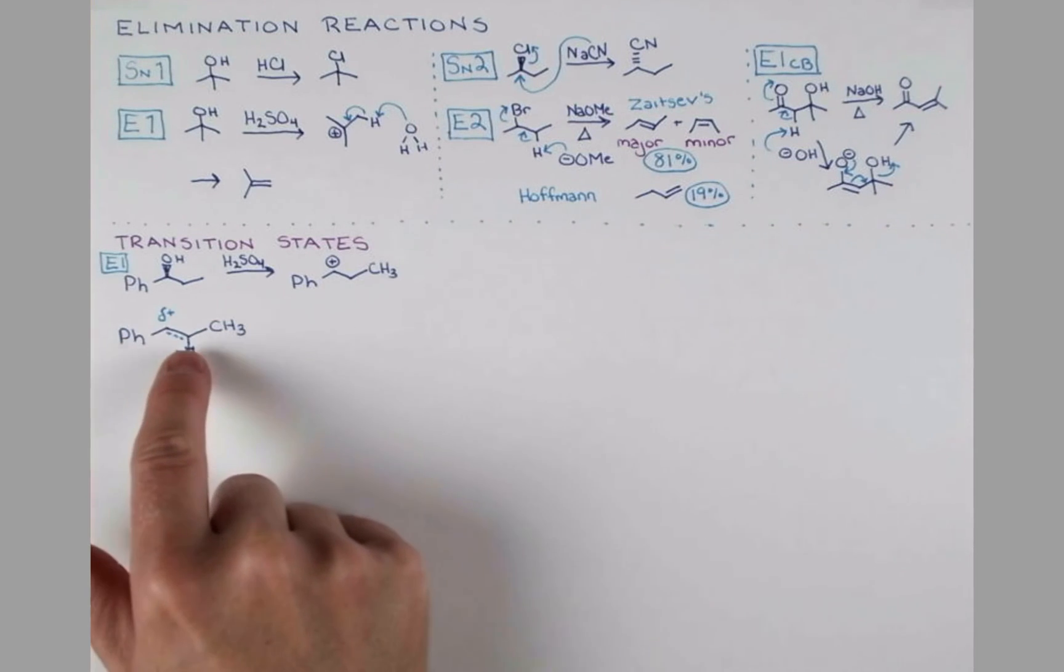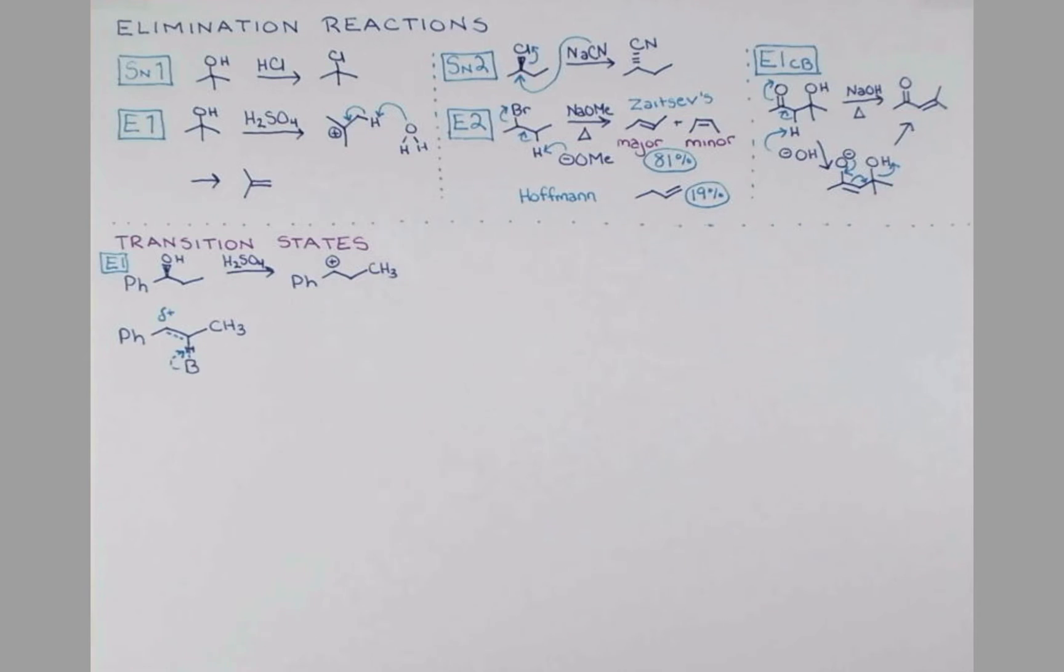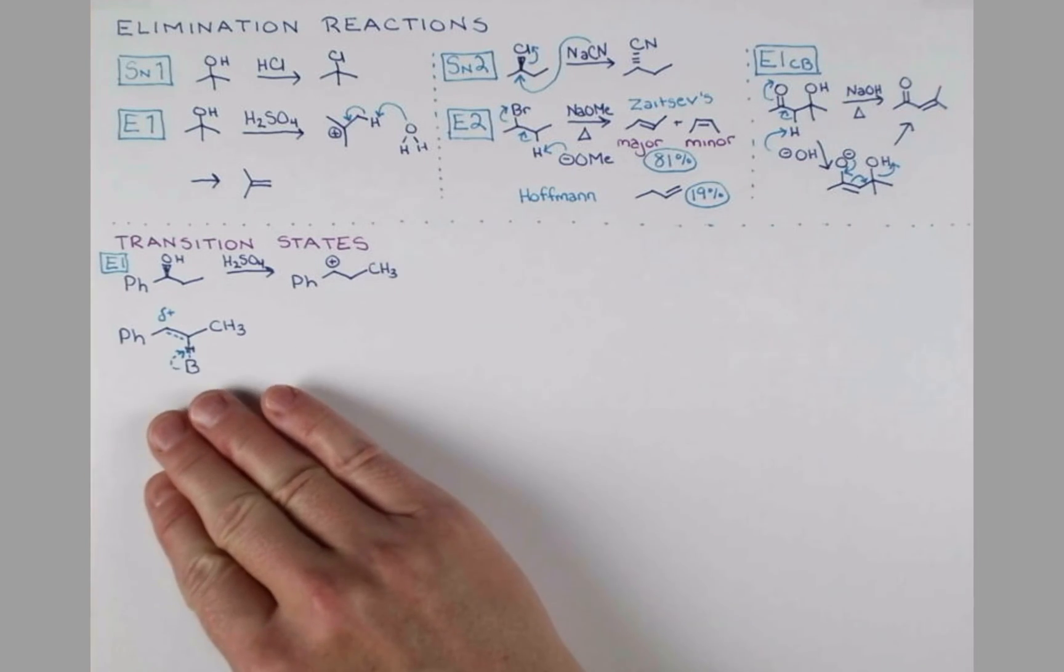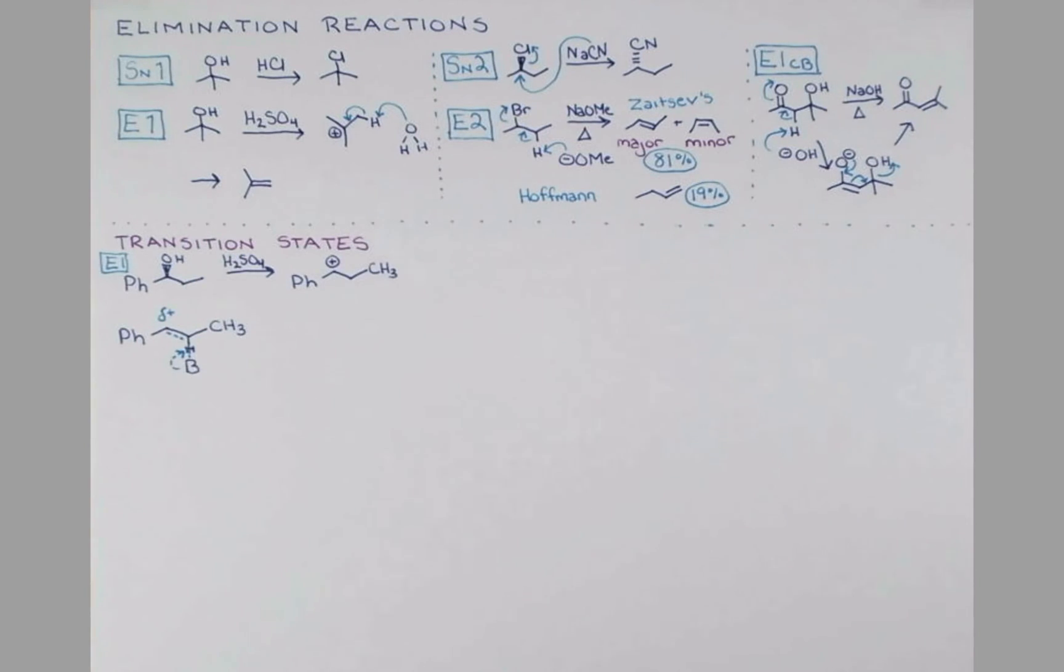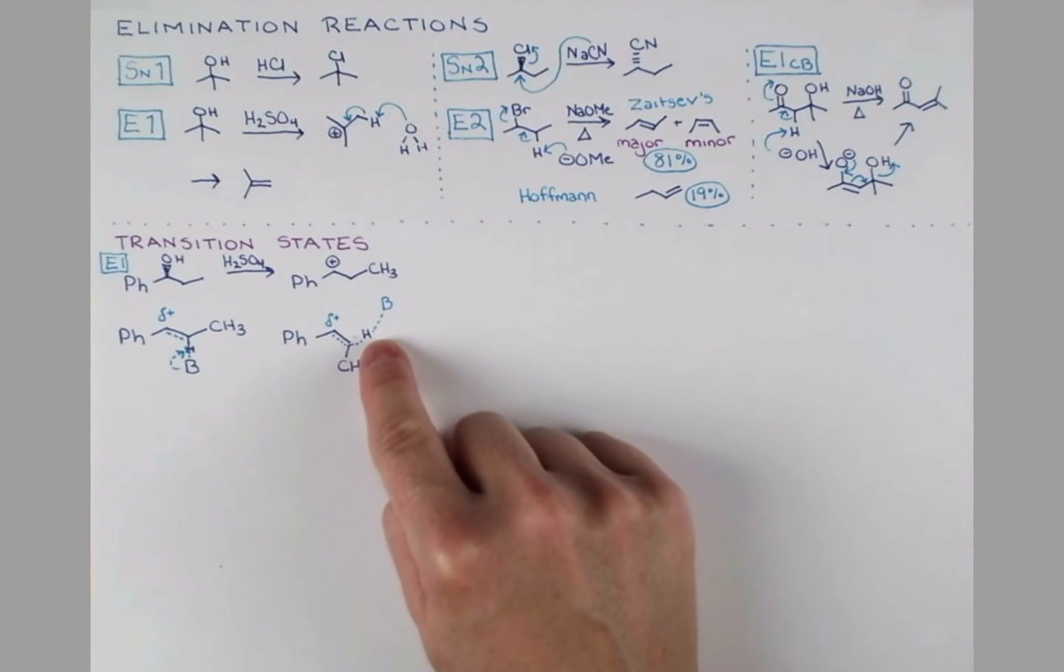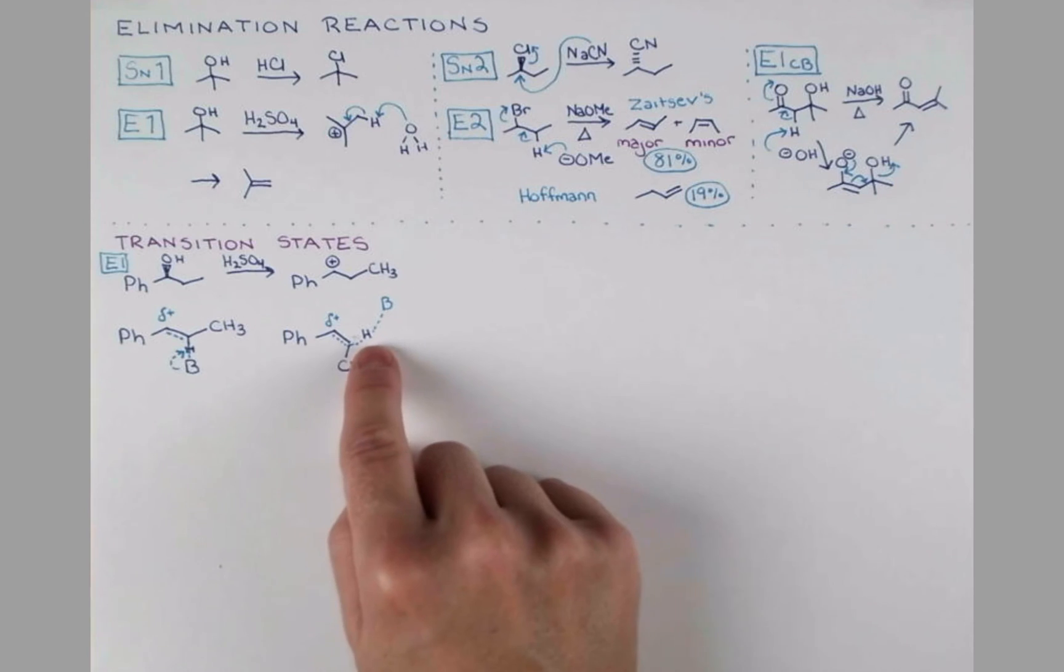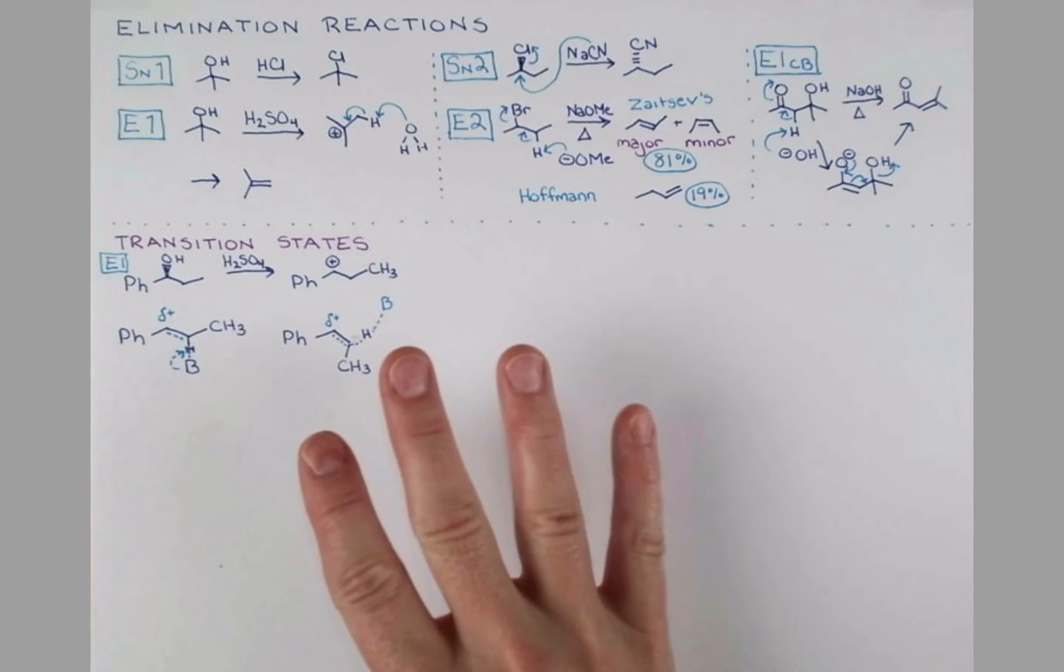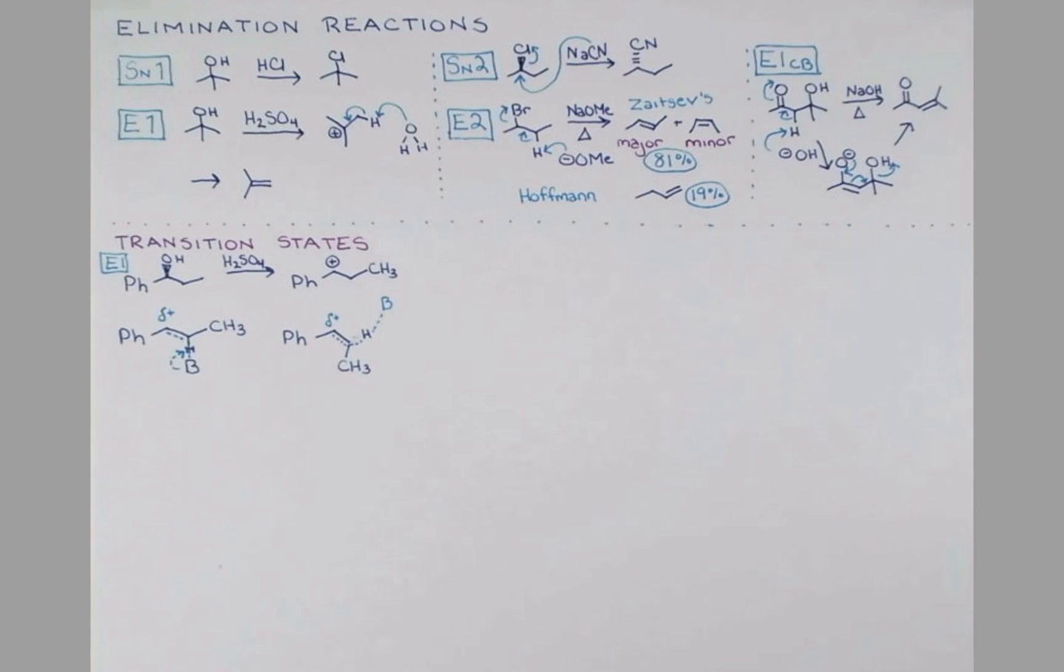This group could be in this orientation, and the transition state might look like this. Our base is coming in, forming a partial bond with this hydrogen. We have a partial double bond forming here and delta positive character where the carbocation is. We can also envision another conformation where this CH3 is flipped down and the base is coming in from the top. We have the base coming in and starting to form a bond with the hydrogen. The hydrogen is breaking, a double bond is forming, and we still have a little bit of partial positive character at that carbon atom.